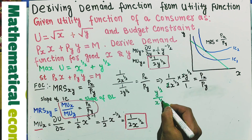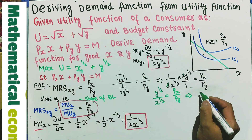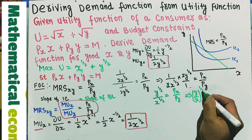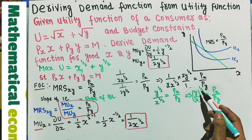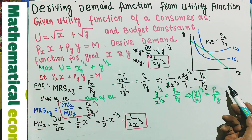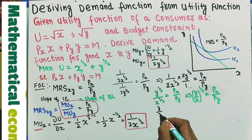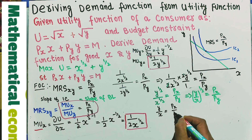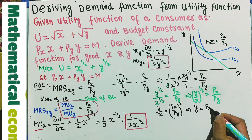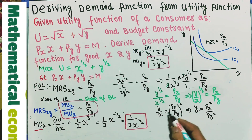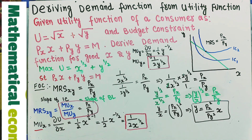This can be rewritten as (y/x)^(1/2) = Px/Py. Squaring both sides, y/x = (Px/Py)^2. Solving for y gives y = x · (Px)^2 / (Py)^2. So the value of y in terms of x is y = Px^2·x / Py^2.